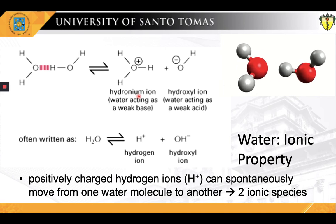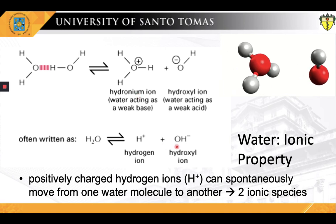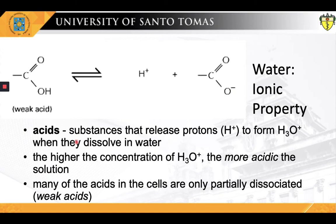In simpler terms, water molecules can dissociate to hydrogen ions and hydroxyl ions. Substances that release protons to form hydronium ions or H3O+ ions when they dissolve in water are termed acids. The higher the concentration of hydronium ions, the more acidic the solution. H3O+ ions are present even in pure water at a concentration of 10 to the negative 7 molar, as a result of the movement of protons from one water molecule to another. By tradition, the H3O+ concentration is usually referred to as the H+ or hydrogen ion concentration, even though most protons in an aqueous solution are present as H3O+ ions. It should be noted, however, that most acids in cells are only partially dissociated and are thus weakly acidic.